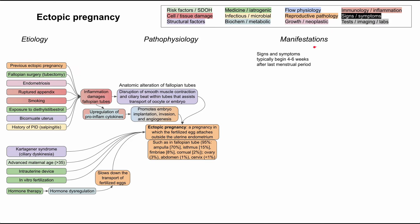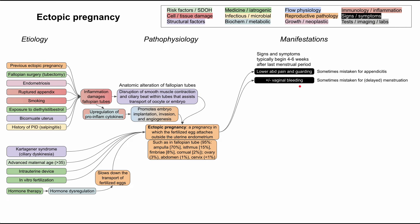Now let's work our way to the manifestations. The manifestations of ectopic pregnancy typically happen around four to six weeks after the last menstrual period. Patients can have lower abdominal pain and guarding. It's important to differentiate this from appendicitis because sometimes they do present similarly — acute onset lower abdominal pain and guarding can be both appendicitis and ectopic pregnancy. Patients may also have vaginal bleeding, which is sometimes mistaken for normal menstruation, though it may be delayed if it's been four to six weeks since the last menstrual period.